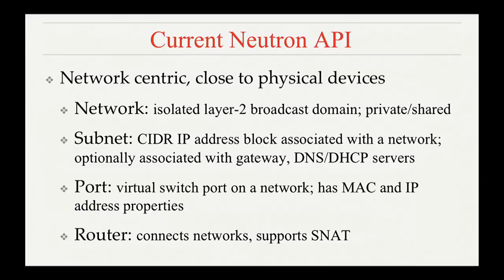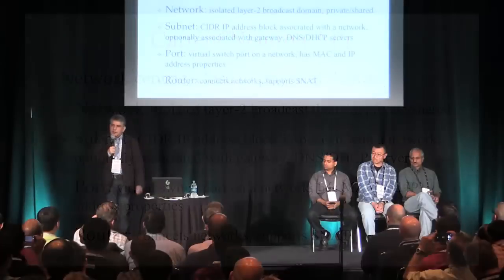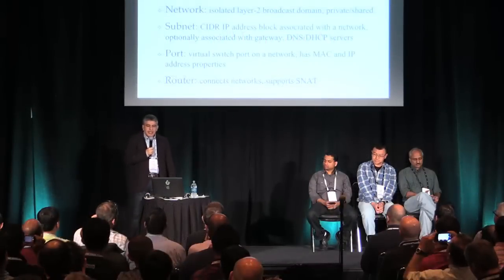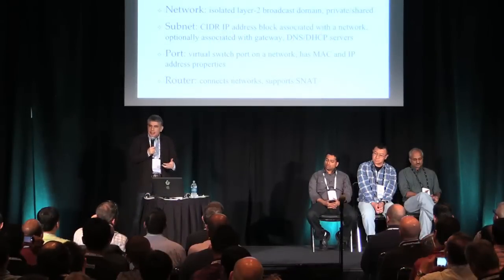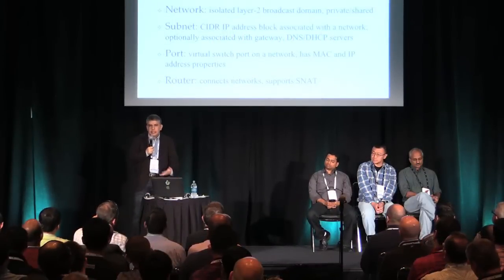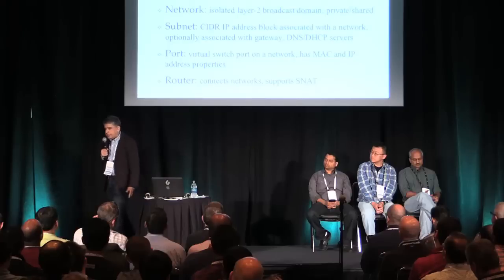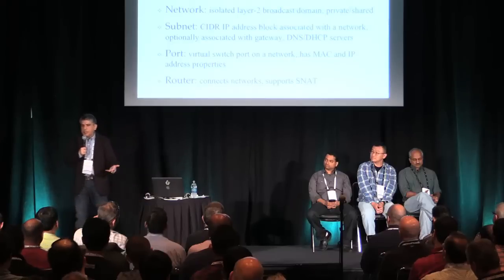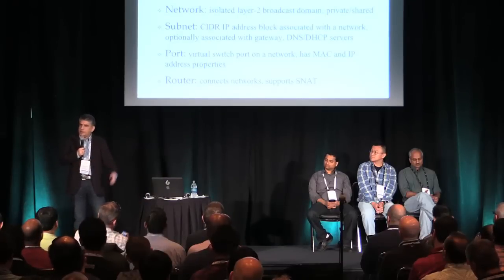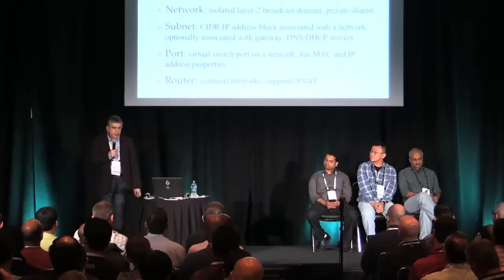Before we get to the group policy extension, here is a quick overview of the basic Neutron API so we are on the same page. The basic resources in Neutron are networks, subnets, ports, and routers — to name just a few important ones. This is very much network-centric, and it has been used for deploying various types of networks.